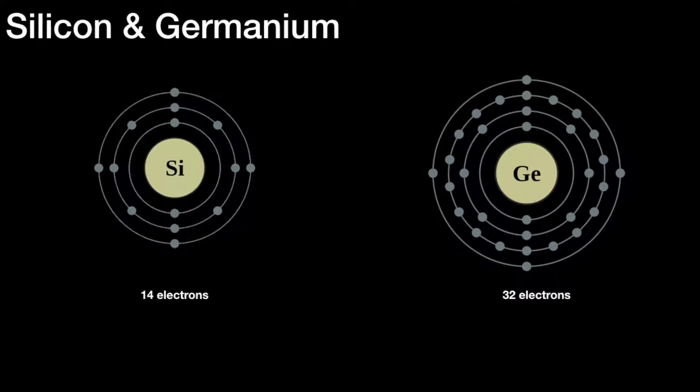It's only the outer shell that really concerns us. The outer shell is the one that gives mobile electrons, which allows currents to flow. The remaining shells don't really affect what we do.